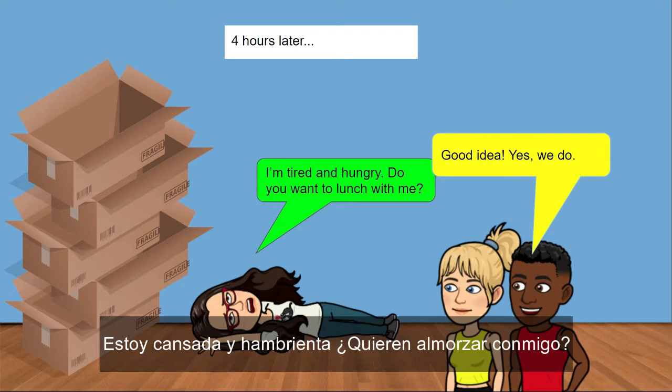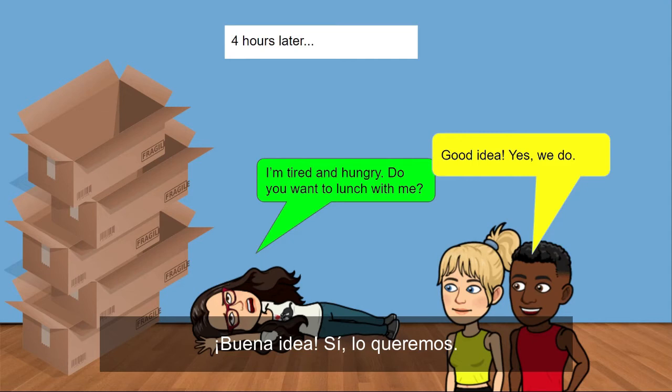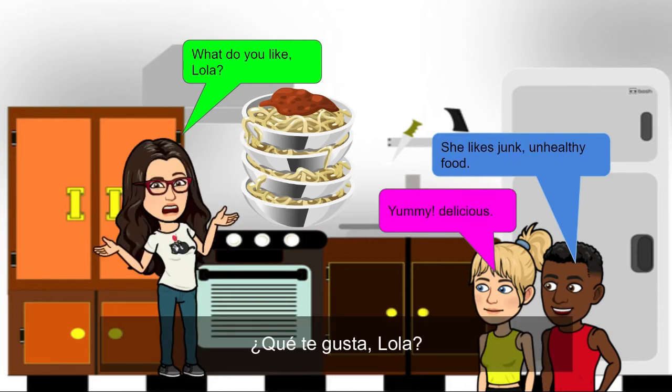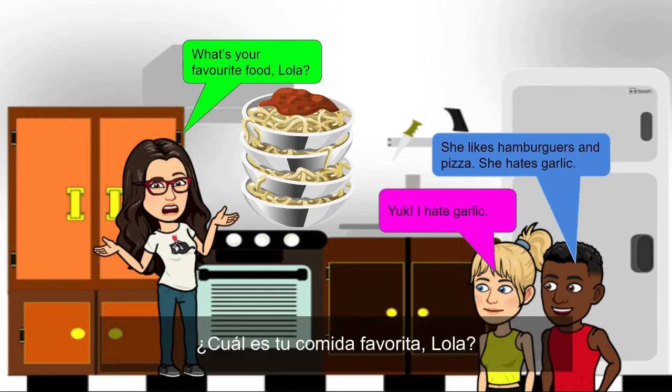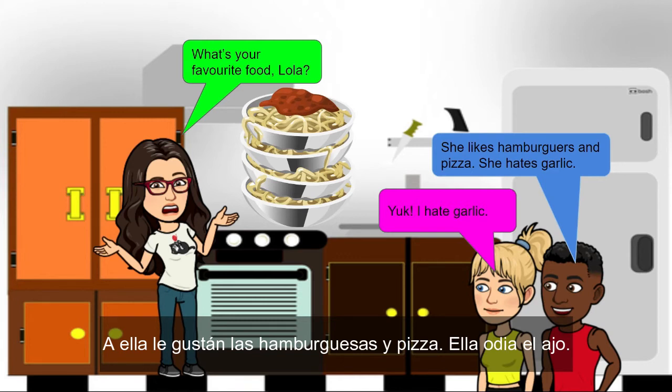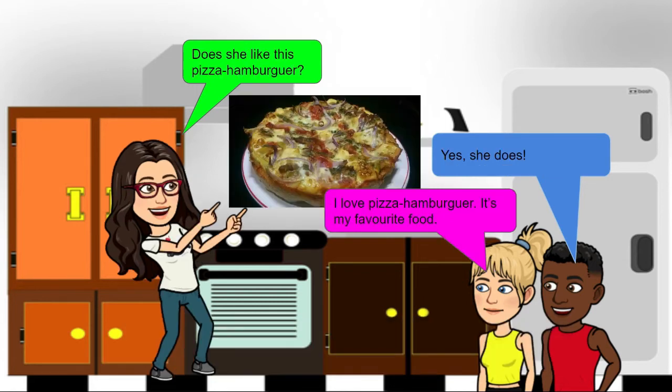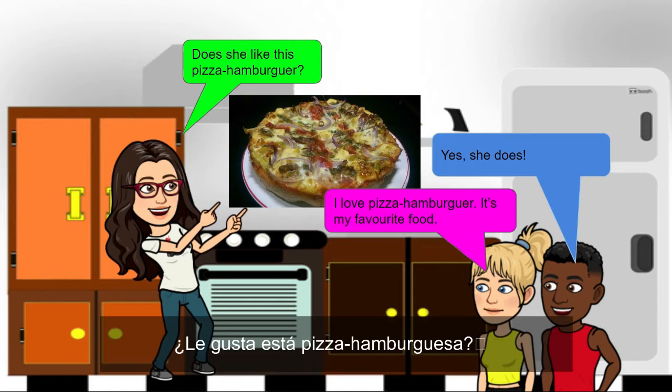Do you want to lunch with me? Good idea. Yes, we do. Do you like pasta? Yes, I do. Pasta is my favorite food. I hate pasta. Yuck. What do you like, Lola? She likes junk and healthy food. Yummy. Delicious. What's your favorite food, Lola? She likes hamburgers and pizza. She hates garlic. Yuck. I hate garlic. Does she like this pizza hamburger? Yes, she does. I love pizza hamburger. It's my favorite food.